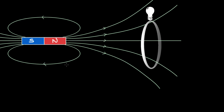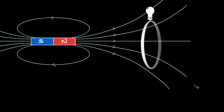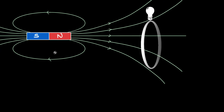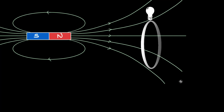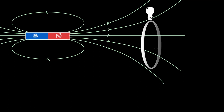For example, if we take 4 seconds to move this magnet from one point to another, the bulb glows and there is some induced EMF. Now if we move the magnet between the same points in 2 seconds — reducing the time by half — the brightness of the lamp increases. It turns out that the EMF induced in 2 seconds was double the amount of EMF induced when we took 4 seconds to move the magnet between the same points.